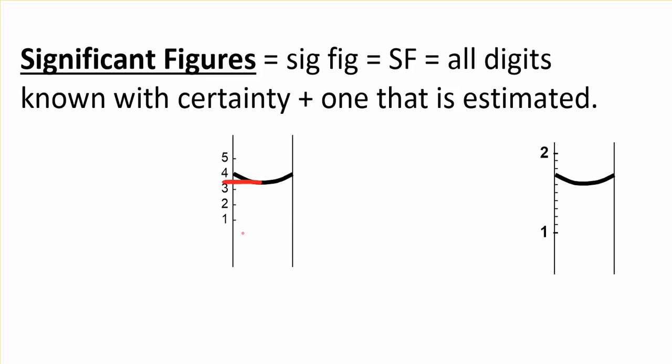When I go to take my measurement, the bottom edge of the red line is definitely between three and four. There's a line for three and there's a line for four, so I can write that digit with certainty.